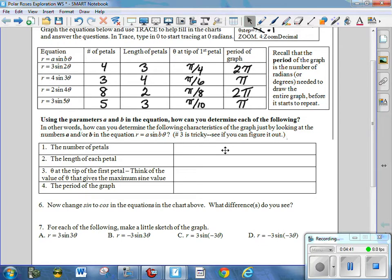Okay, number of petals. Notice that sometimes the number of petals, let's do the length of the petals first, because that's the easiest. The length of the petals matches the number outside the sine function. That corresponds to the amplitude of a sine function in rectangular form, so that makes sense, because amplitude is the distance up and down, whereas in the polar form, that is the distance in and out from the pole. So, the farthest out it can go, when the sine function equals 1, would be 3, 4, 2, or 3. So, the length of the petal is just a.